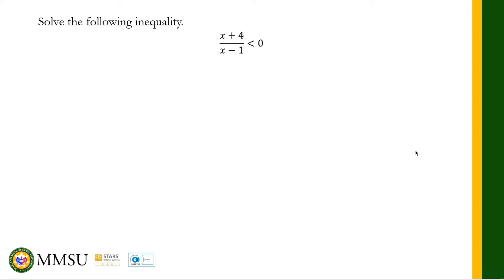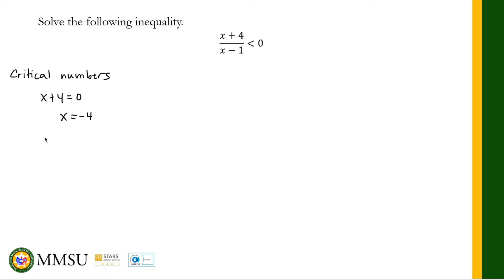We equate the numerator to zero: x + 4 = 0, so x = -4. Also for the denominator: x - 1 = 0, so x = 1. So we have two critical numbers: x = -4 and x = 1.